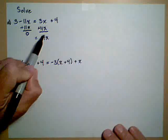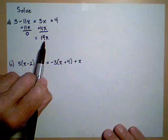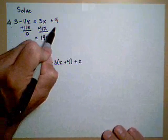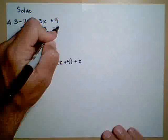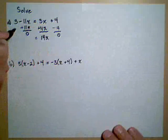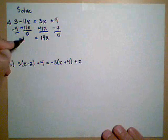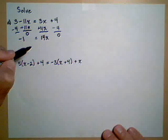Since we put the x's on this side, let's put the terms without x on the left-hand side. So we're going to subtract 4 from both sides.